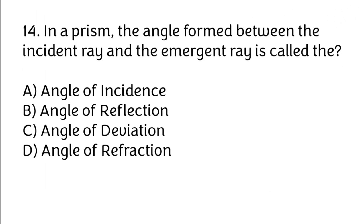In a prism, the angle formed between the incident ray and the emergent ray is called the: A. Angle of incidence, B. Angle of reflection, C. Angle of deviation, D. Angle of refraction. Correct answer is C. Angle of deviation.